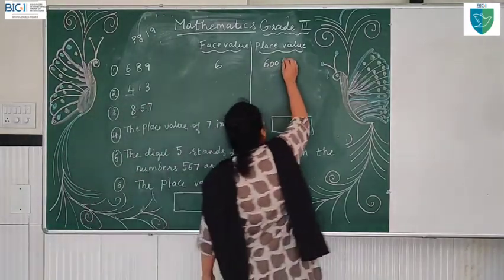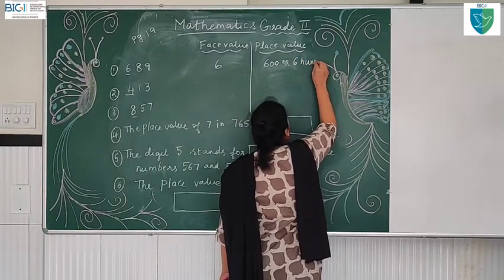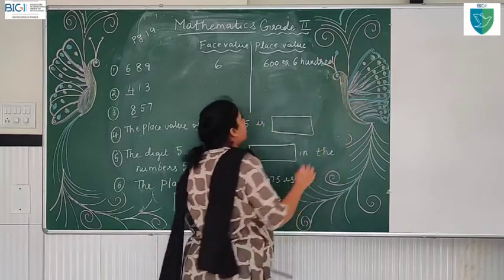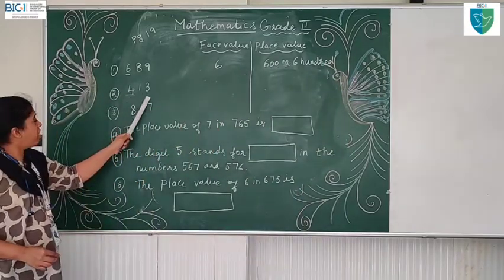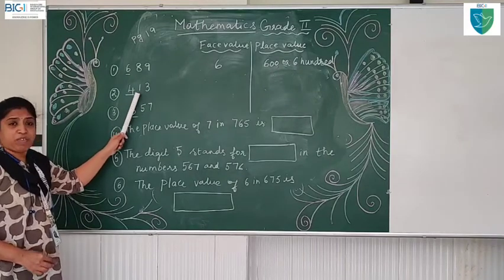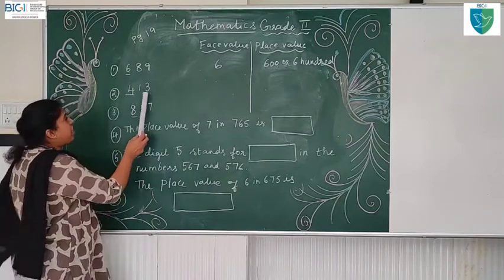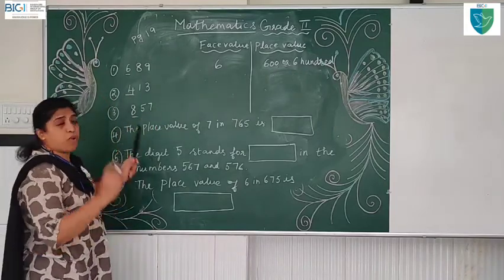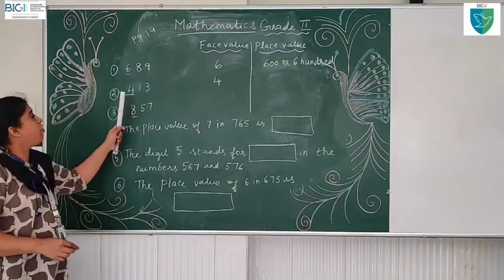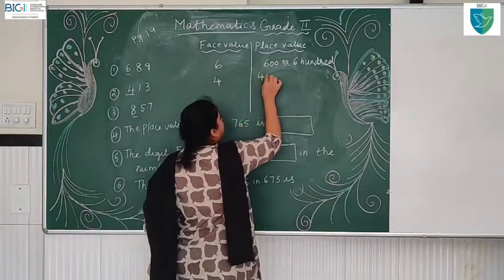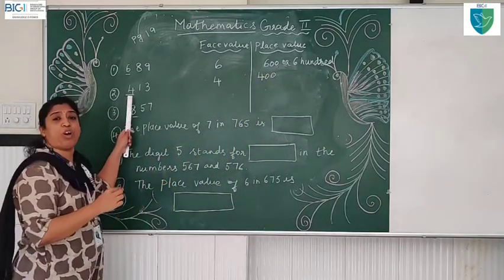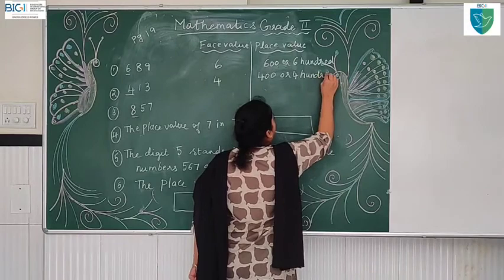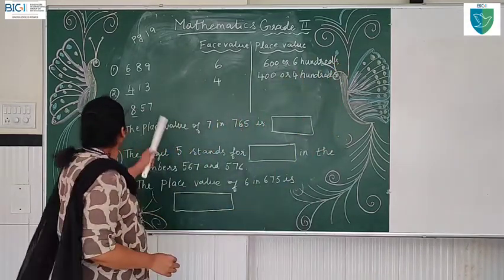Understood? Face value of six is six hundred. Now what is the face value here? Four is the face value here. Four is in the hundreds place. Now what is the place value? Four itself. What is the place value? 400. What is the place value here? Four is in the hundreds place — 400. Now we go to the next problem.